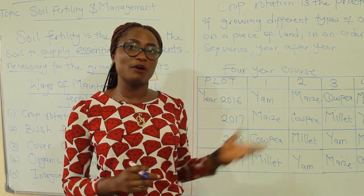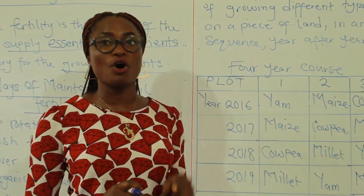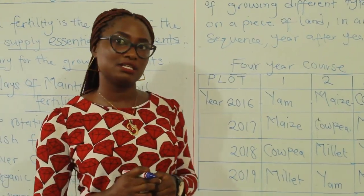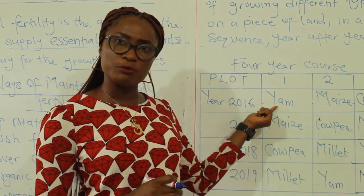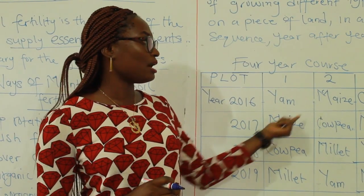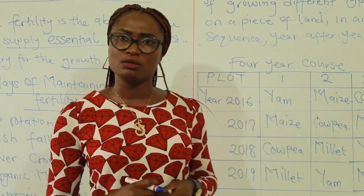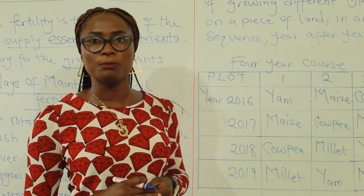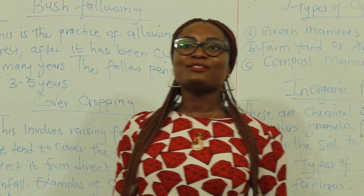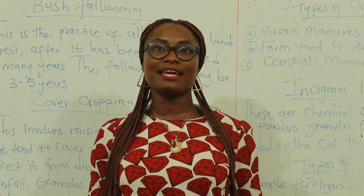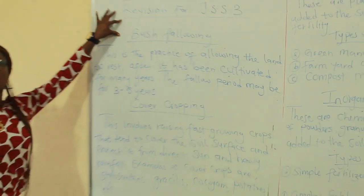The advantage of crop rotation is that it increases or maintains soil fertility because the amount of nutrients yam uses in growing will not be the same as the amount of nutrients maize uses. So the depletion of nutrients will be very low — that's the essence of practicing crop rotation. Now let's look at the second way of maintaining soil fertility, which is bush fallowing.